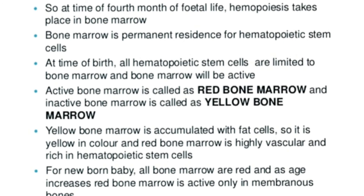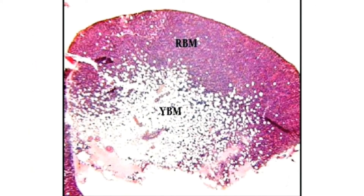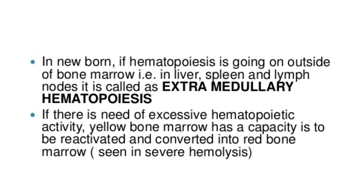Red bone marrow continues as the source of blood cells after birth and throughout life. Yellow bone marrow is accumulated with fat cells, so it is yellow in color. Red bone marrow is highly vascular and rich in hematopoietic stem cells. In this figure you can clearly see the difference between the red bone marrow and the yellow bone marrow.